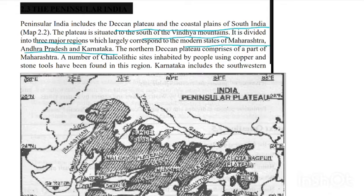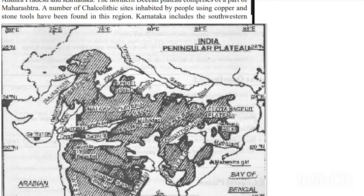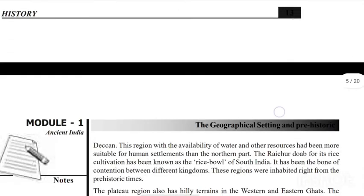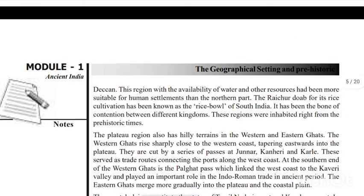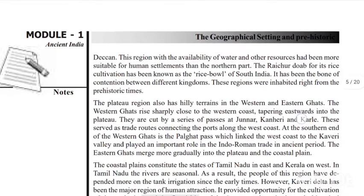The Northern Deccan Plateau comprises part of Maharashtra. If you look at the copper and stone tools, these are divided into three major regions of the south of Deccan. This region, with the availability of water and other resources, had been more suitable for human settlements than the northern part.